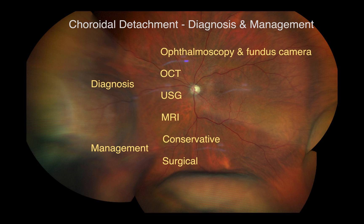The suprachoroidal space may be detected with ultrasonography during a choroidal detachment. B-scan ultrasonography may be used to differentiate serous and hemorrhagic choroidal detachment because the fluid in the serous detachment is more hypo-ecogenic than blood. Ultrasonography can also be used to determine the dynamics of blood in hemorrhagic detachment.